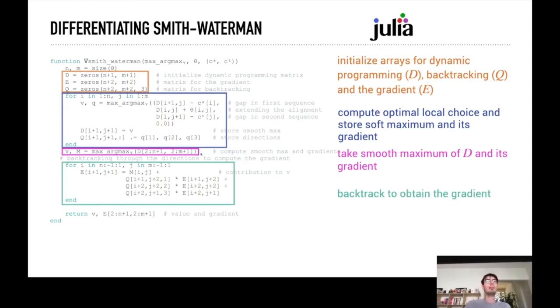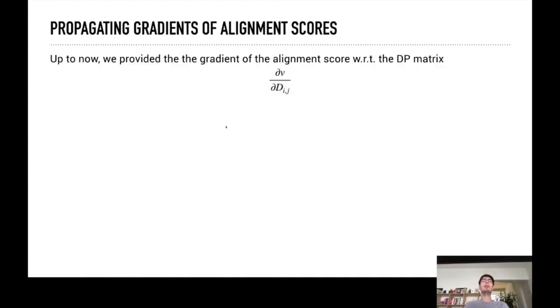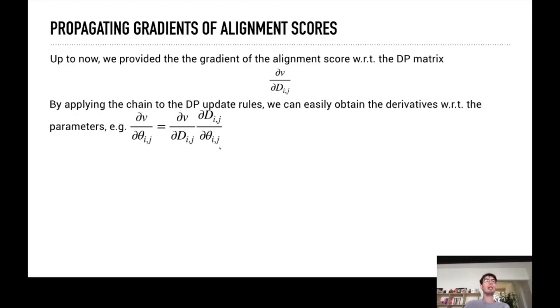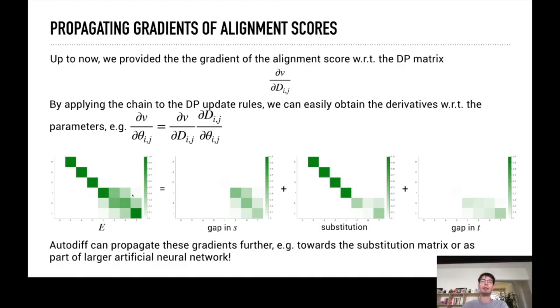So up to now we know how the alignment score changes if you change the dynamic programming matrix, and this is diagnostically quite interesting. But we can also use the chain rule to extend this to say how will the alignment parameters or the sequences influence this alignment score. Just the chain rule, also some nice interpretations so you can split this gradient.